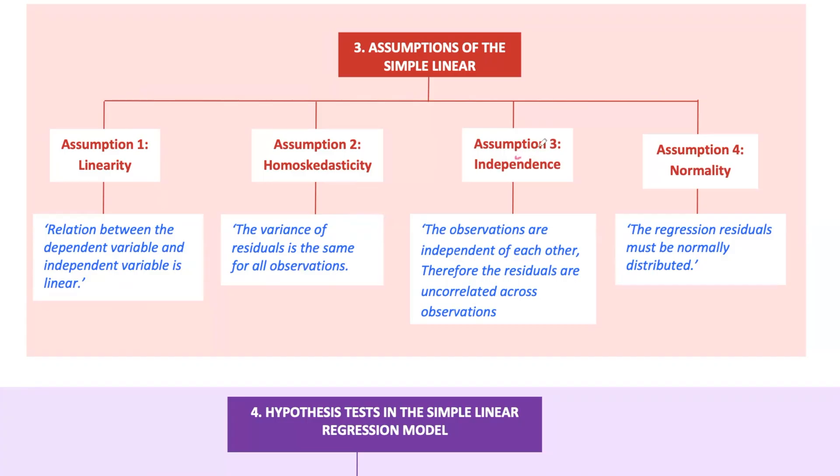Third is independence. The observations are independent of each other. This means that the value of one observation does not influence another. If this assumption is violated, we might have autocorrelation, where the errors are correlated across observations.